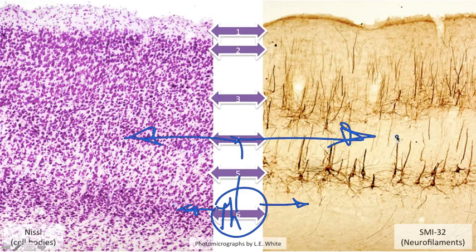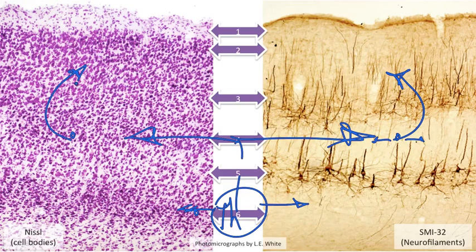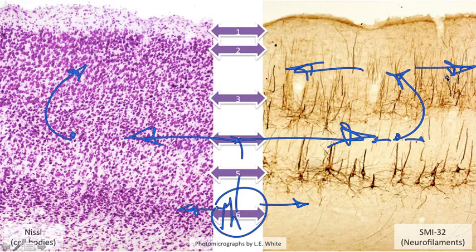From there, cells in layer 4 interconnect with one another, but they also send major inputs to the upper layers of the cerebral cortex, layers 2 and layer 3. Once information gets into those upper layers of cortex, it can be broadly distributed. Information can go in the horizontal direction from one region of layer 3, for example, to a neighboring region of layer 3.